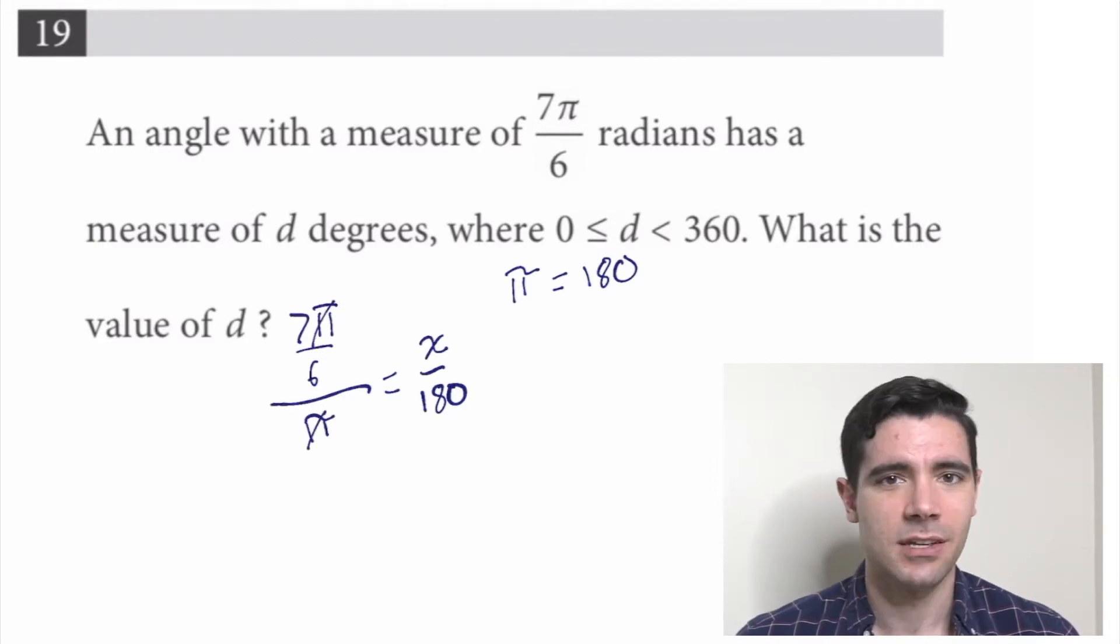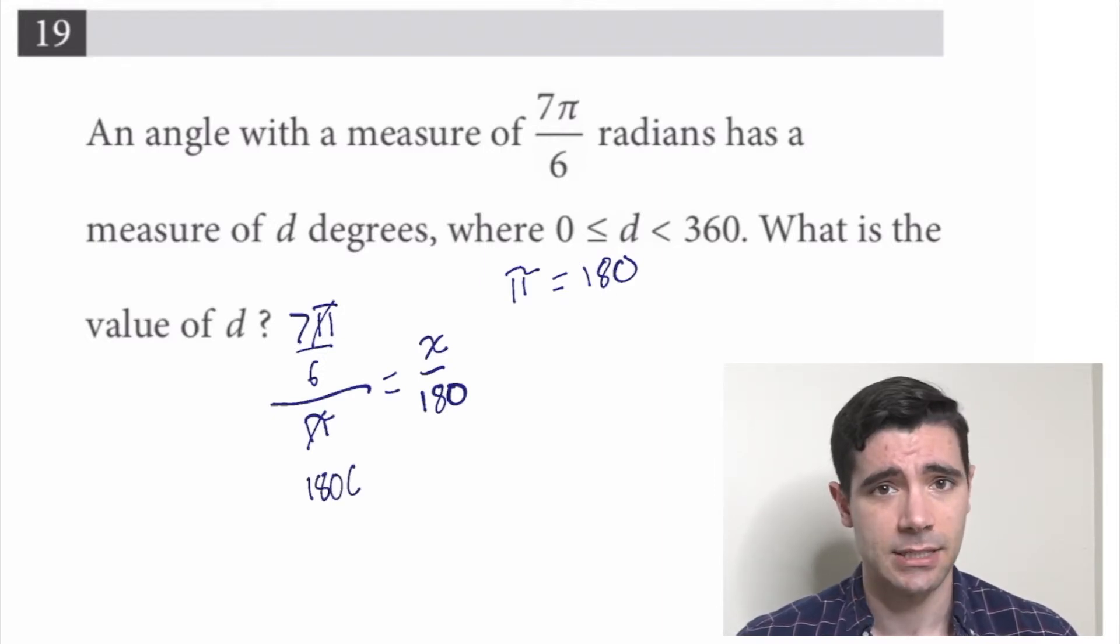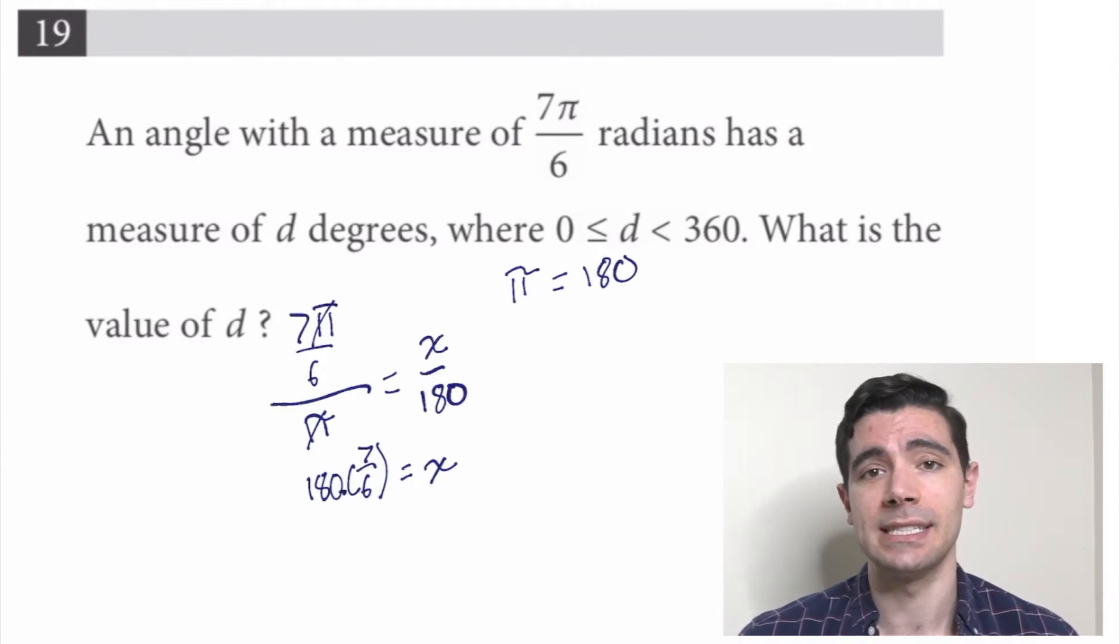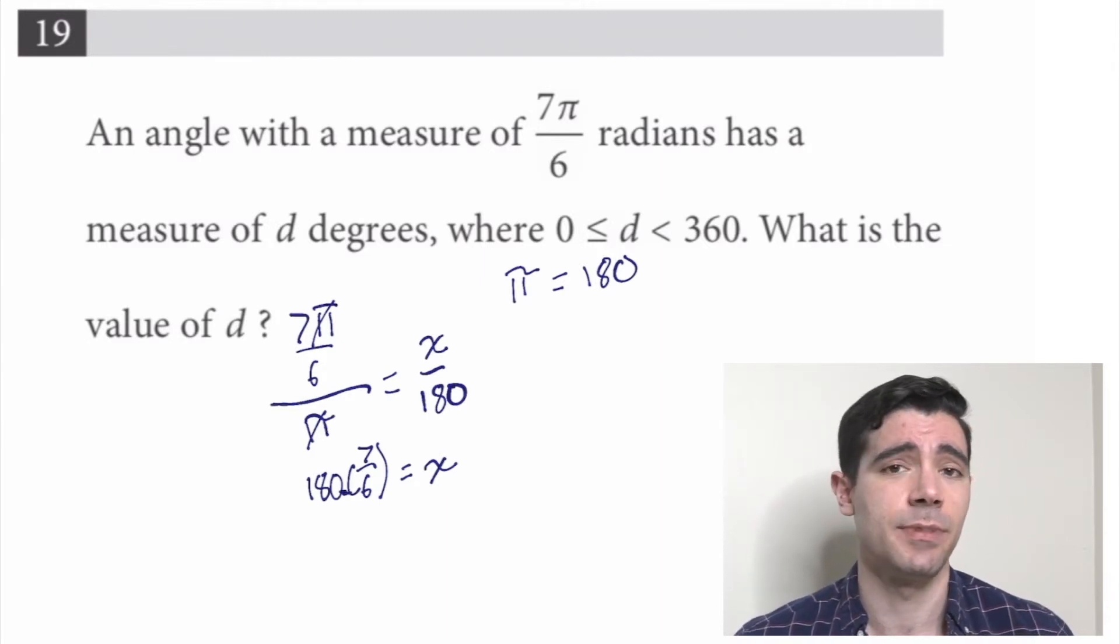7π/6 over π, well, we can cancel off the π's, so this becomes 7/6 over 1, or just 7/6, equals x over 180. So we're going to want to multiply both sides by 180. 180 times 7/6. We could multiply 180 times 7 and then divide it by 6, but we don't have our calculators right now, and that sounds like kind of a bummer. Perhaps it would be simpler to say, alright, well what is 180 divided by 6? It's not so bad. It turns out to be 30.